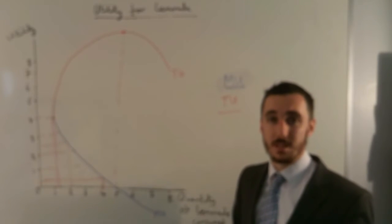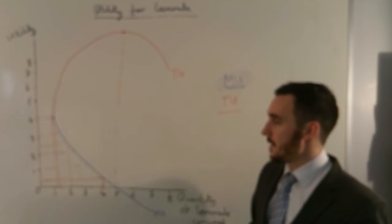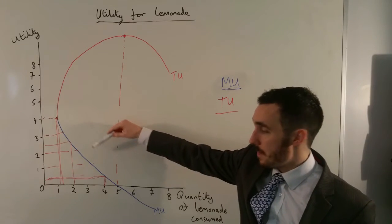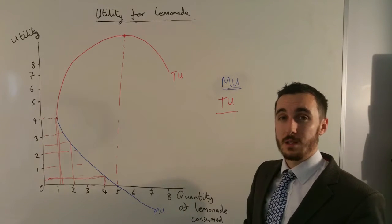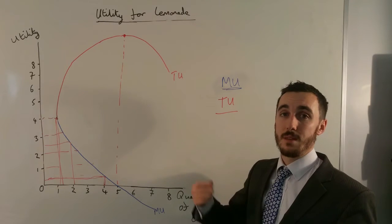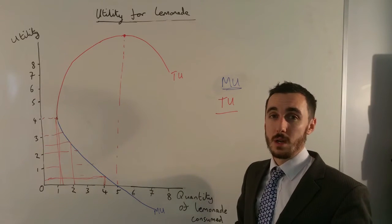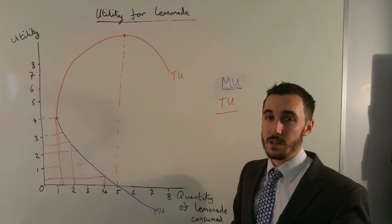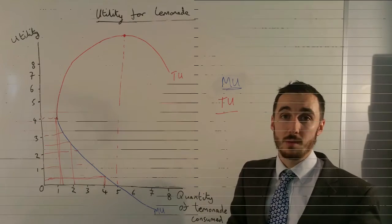That wouldn't make rational sense as an economist. So this diminishing marginal utility directly correlates to the willingness to buy a good or service, and therefore the individual demand curve.